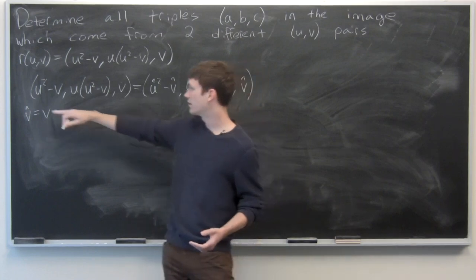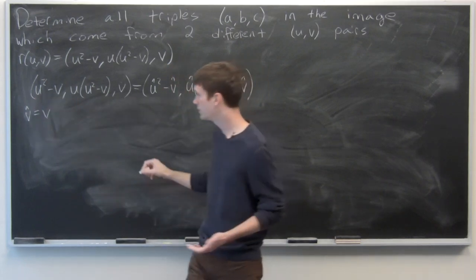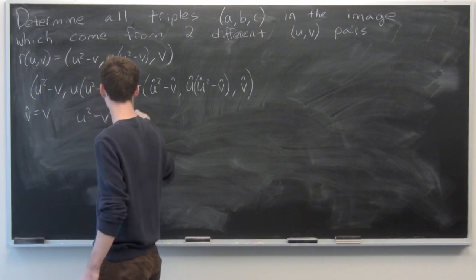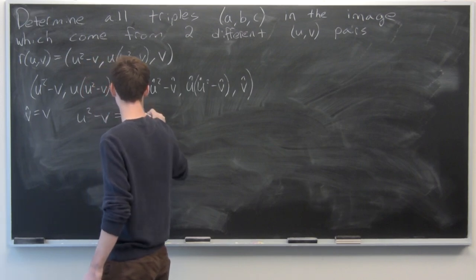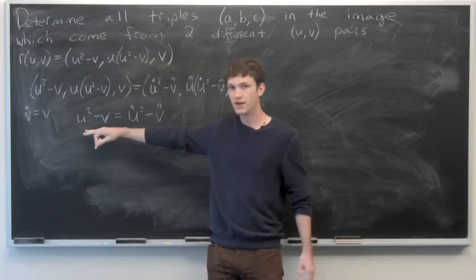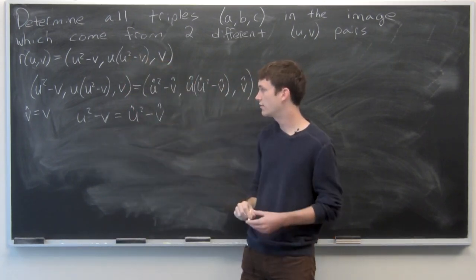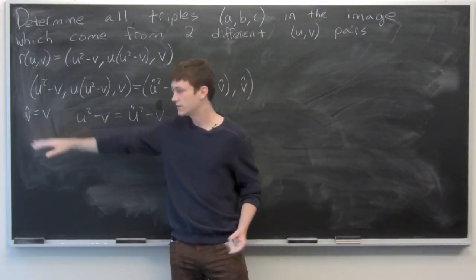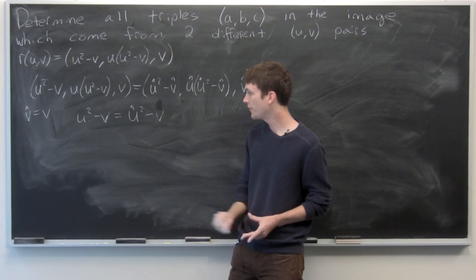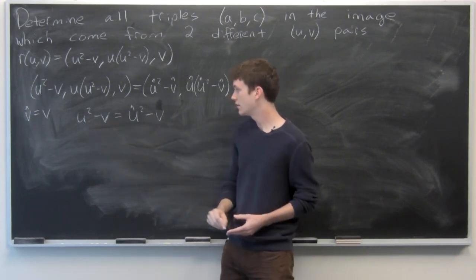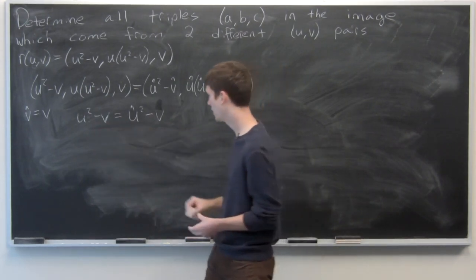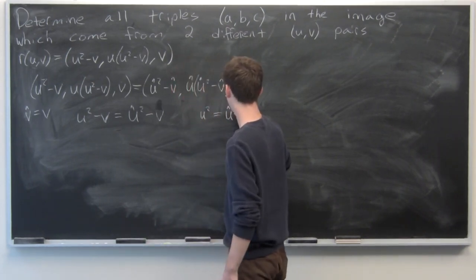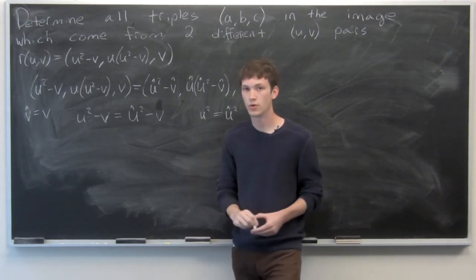If we look at the first component, we see that u-squared minus v-hat is equal to u-hat squared minus v-hat. But we know that v-hat equals v, so we can plug that in. Bringing the v over to the left-hand side, they'll cancel. So we get that u-squared is equal to u-hat squared.